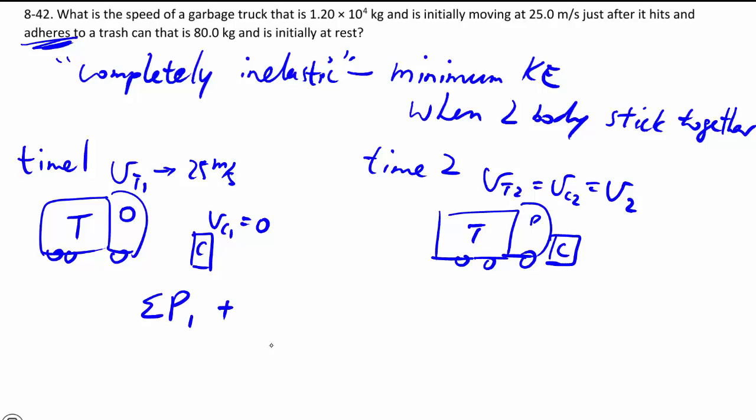We once again write our momentum impulse equation, which some call the conservation of momentum equation. And again we have no external forces because we are including both the truck and the can as part of our system. So there's no external force which is going to give us a big fat zero.